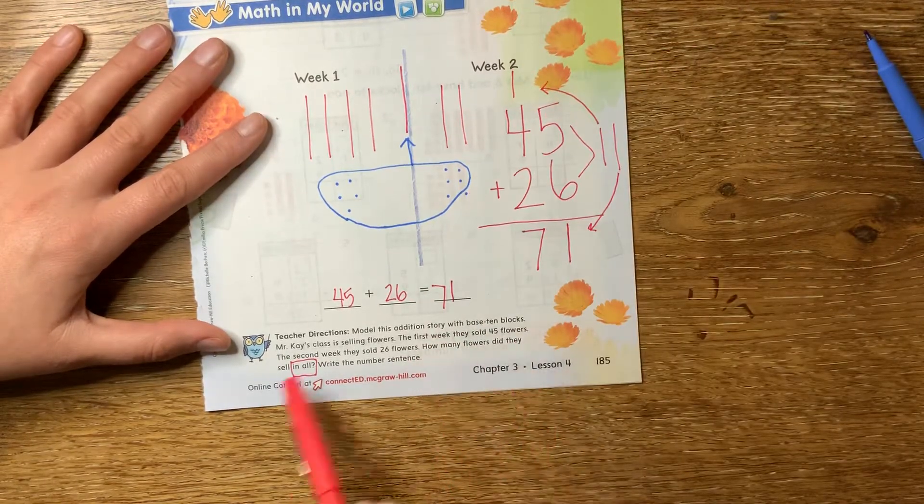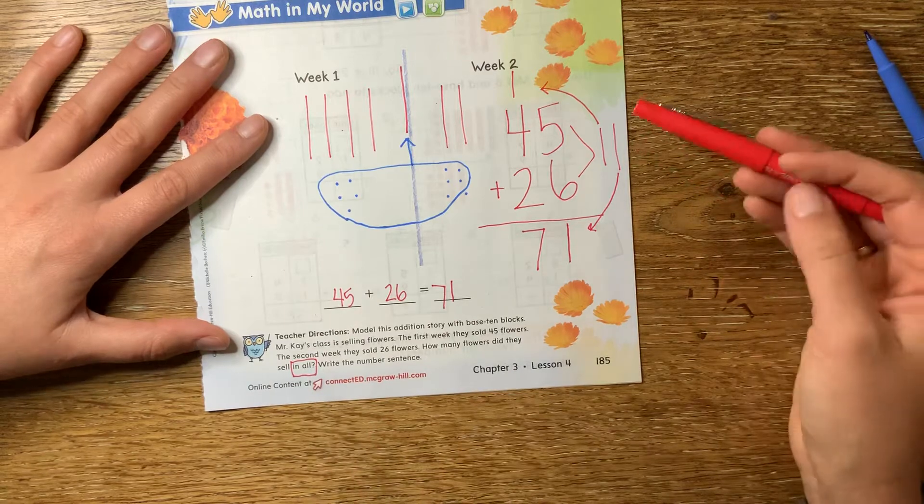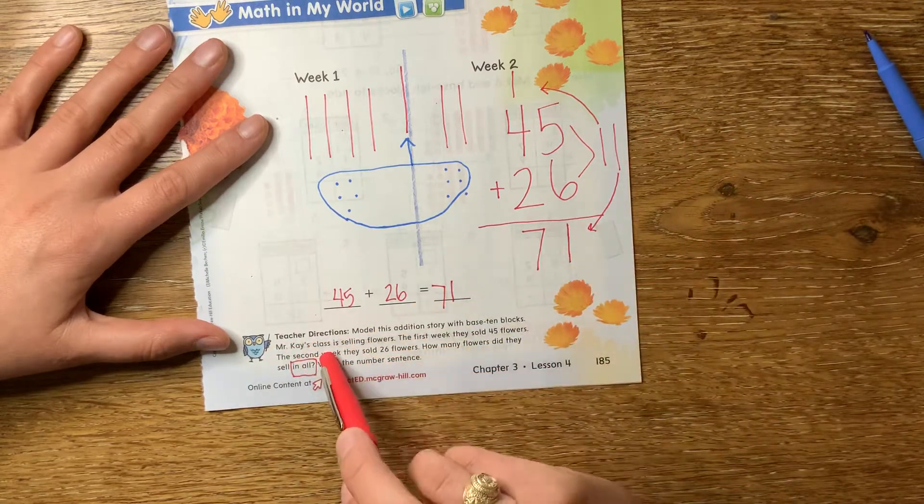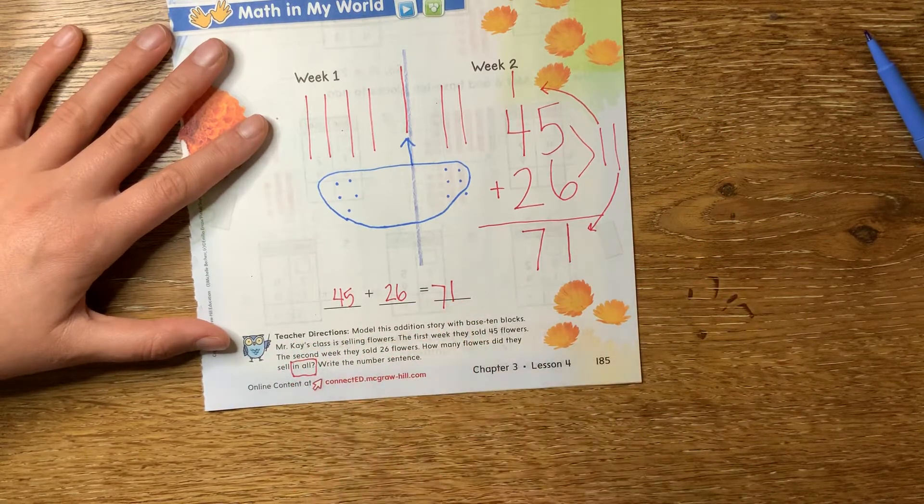How can we put this in a complete sentence? Remember, the question was, how many flowers did they sell in all? You could say, Mr. K's class sold 71 flowers in all. All right, awesome job. Let's flip it over.